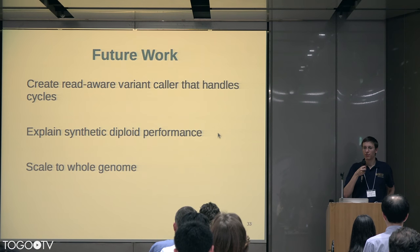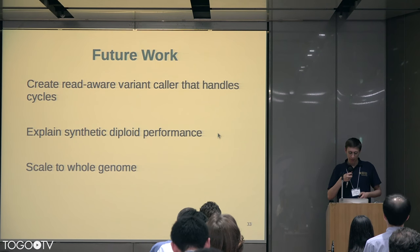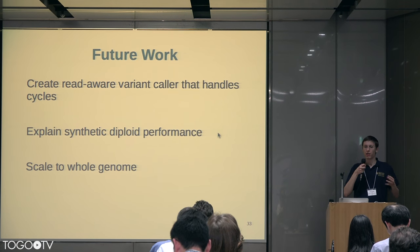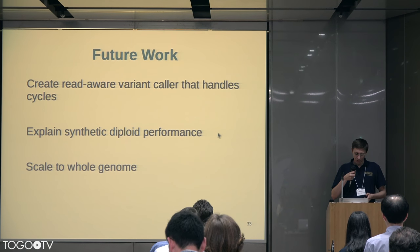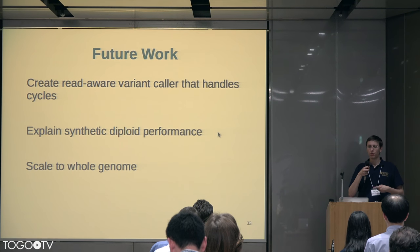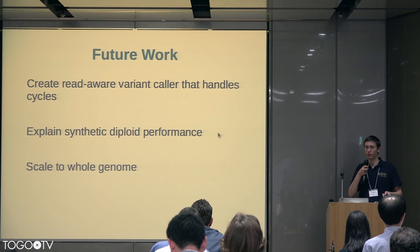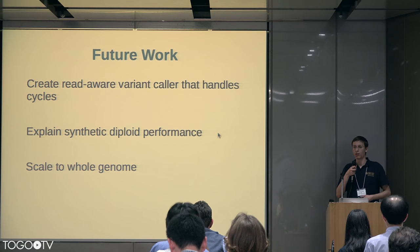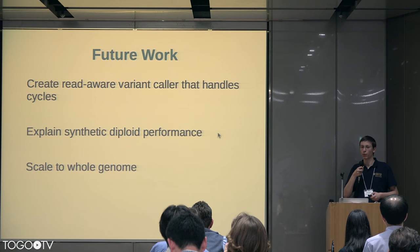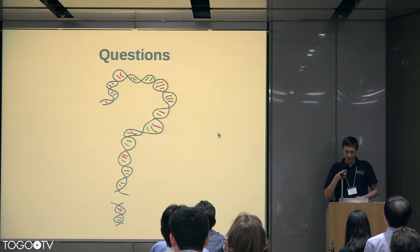This is still a work in progress. VG is still fixing bugs and I'm still engineering the pipeline to get an HGVM out that people would actually want to use. I want a better variant caller, and I want to explain more convincingly why we see improvements only in substitutions and deletions and not in insertions. I also want to scale this up to the whole genome from my test run on chromosome 22. In conclusion, I'd like to acknowledge a very large screen full of people, and I will now take questions.